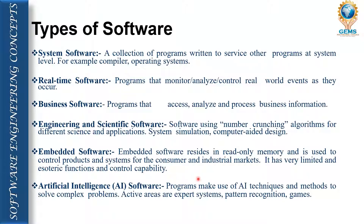Engineering and scientific software is designed for engineering and scientific research purposes, for example number-crunching algorithms used for scientific applications, simulation of practical work, and computer-aided design. Embedded software resides in read-only memory (ROM) and is used to control products and systems for consumer and industrial markets — ROM is the best example, where software is already mounted on the hardware. Artificial intelligence software is used for complex problems especially pattern recognition, mail gaming, and robotics.